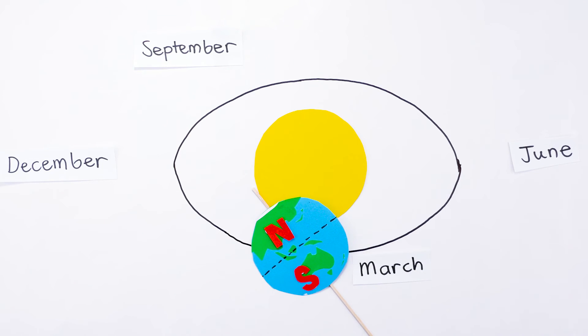In March the Earth's axis is tilted to the side. So again neither hemisphere is tilted more towards the Sun. There's spring in the northern hemisphere and autumn in the southern hemisphere.